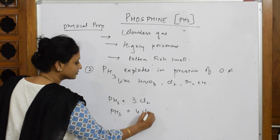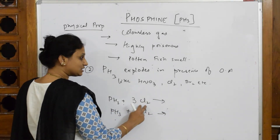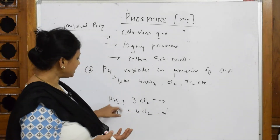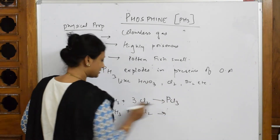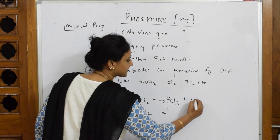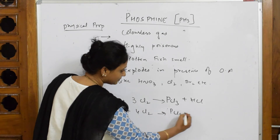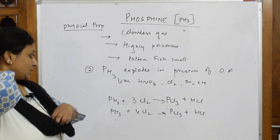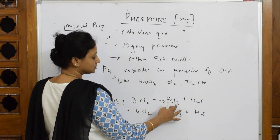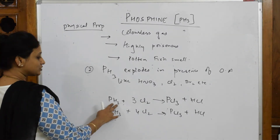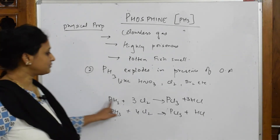With three moles of chlorine, the product is PCl3 and HCl is released. Let's balance: chlorine on the left is three, giving six total; hydrogen is three, so we need three HCl. One phosphorus is balanced on each side — so: PH3 + 3Cl2 → PCl3 + 3HCl.